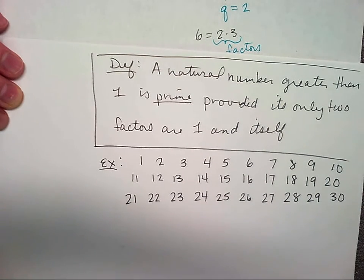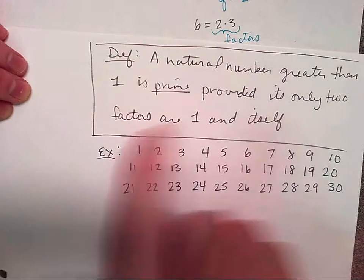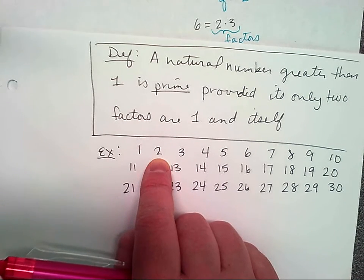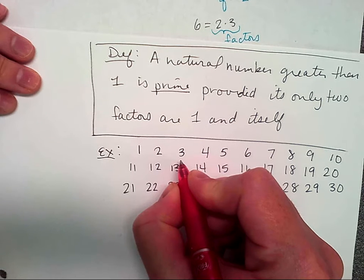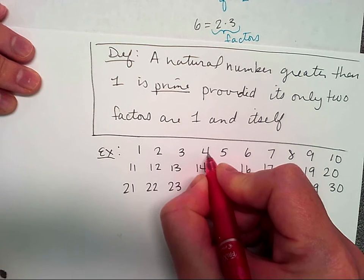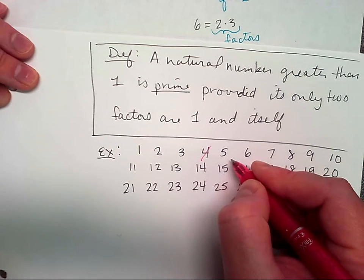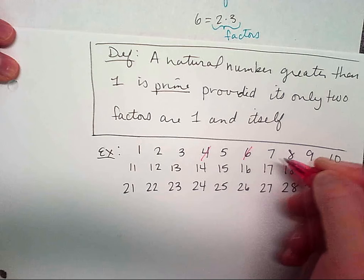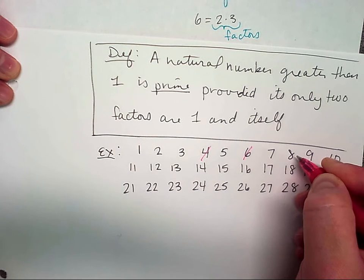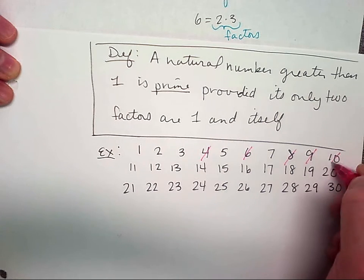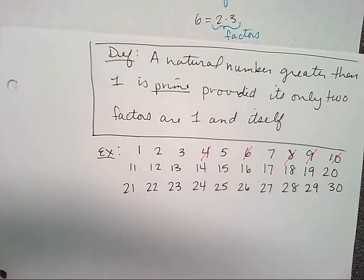Let's cross out all the non-primes. Is two prime? Yes, because two is only one and itself. Is three prime? The only two factors are one and itself. Four — no, because two times two. Five — yes, because it's only one and five. Six — no. Seven — yes. We can go through and cross out all the even numbers because they're all divisible by two.